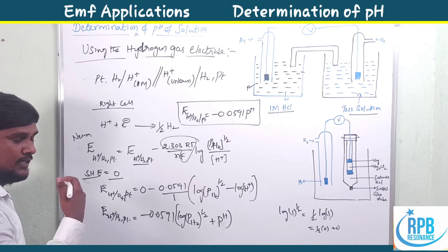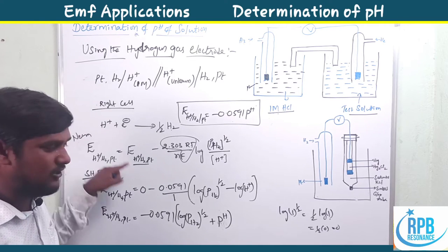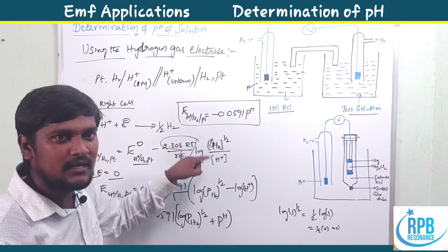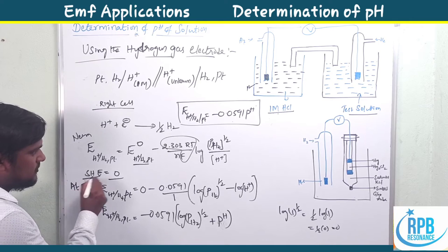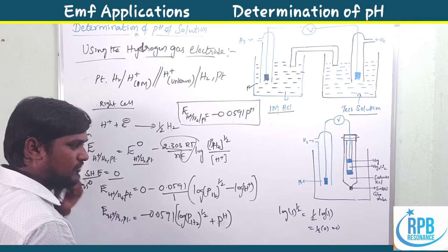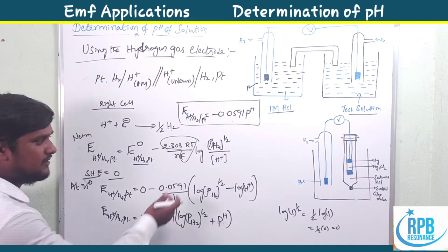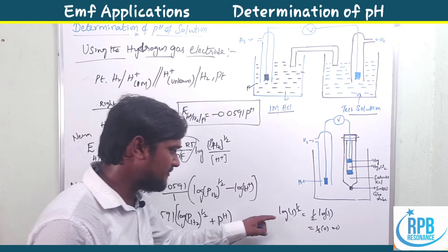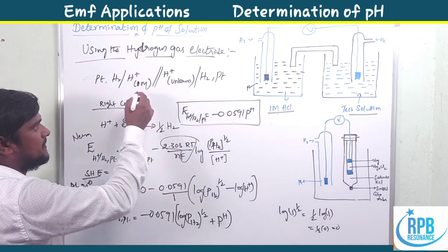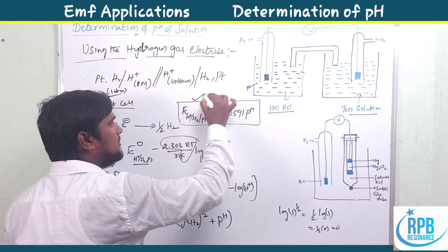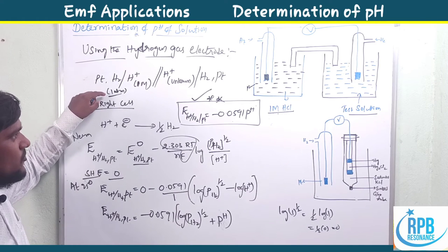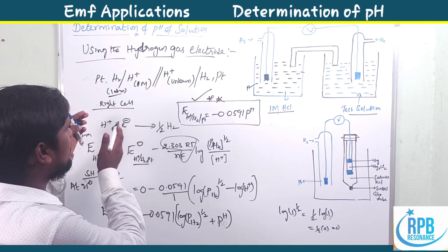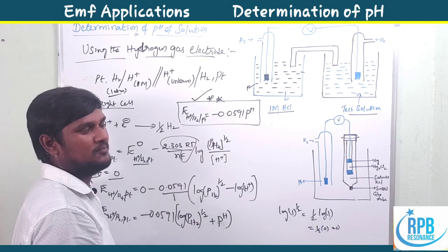This Nernst equation applies to the right-hand side electrode where H+ gains electrons to form H2. At 25°C, 2.303RT/F = 0.0591. If pressure is 1 atmosphere, log P(H2) term equals 0, giving the direct formula. If pressure is 2 atmospheres, we substitute those values using a calculator. With the hydrogen gas electrode we can easily find the pH value of the solution.